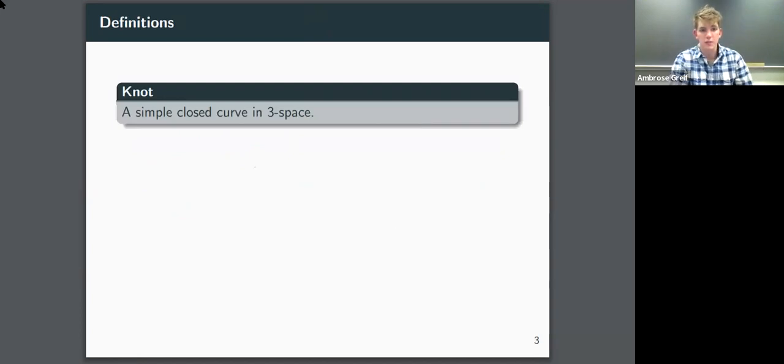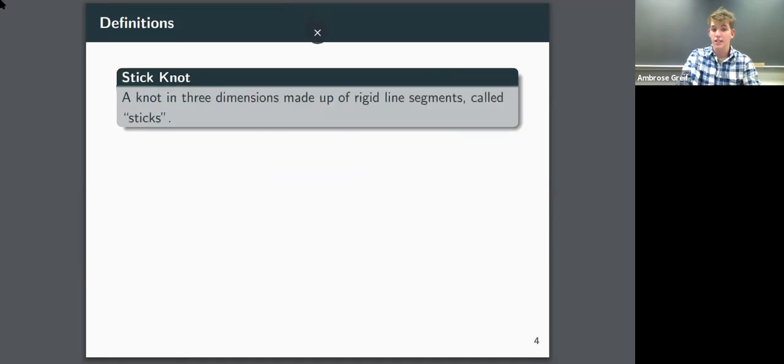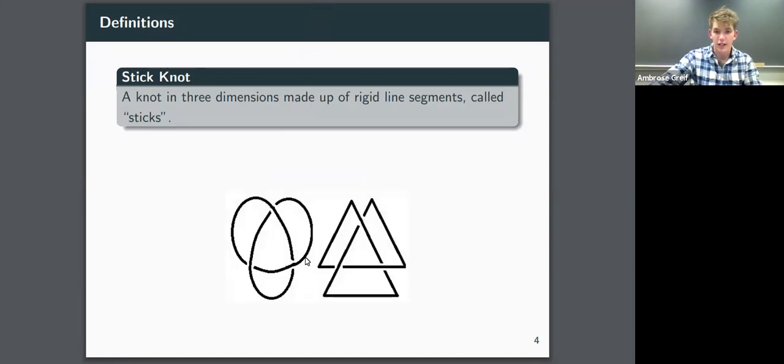So now we'll move on to some definitions. A knot is a simple closed curve in three space. Here we see, once again, the trefoil knot, which can also be thought of as a union of infinitely many line segments, so many that it appears smooth. And that definition allows us to more clearly see the relationship between a knot and a stick knot, which is a knot in three dimensions made up of rigid line segments called sticks.